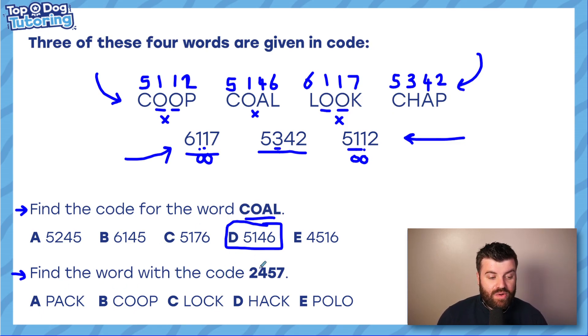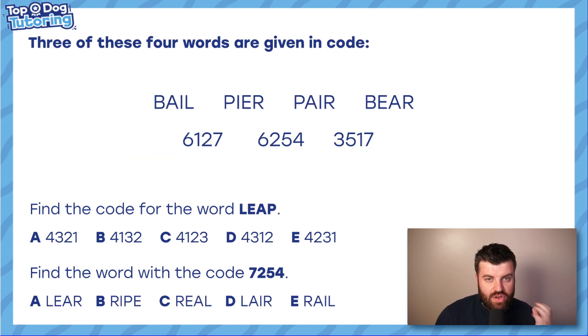Find the word with the code two, four, five, seven. We just simply work backwards and we look at one number at a time. What was two? Well, we found that two was P. I can see that in coop. What was four? I can see in coal that four was A. So it's PA. And look at that. We could carry on, but remember 11 plus is all about trying to save time. What's the only answer that starts with PA? Well, it's not coop. It's not lock. It's not hack. It's not polo. The only one left is A. If you want to carry on and prove that five and seven were C and K, you can do that, but there's no need. We're going to save time.